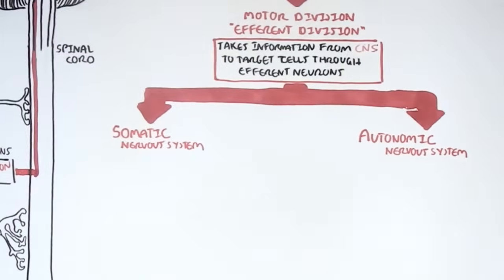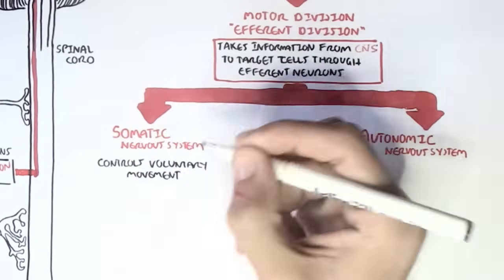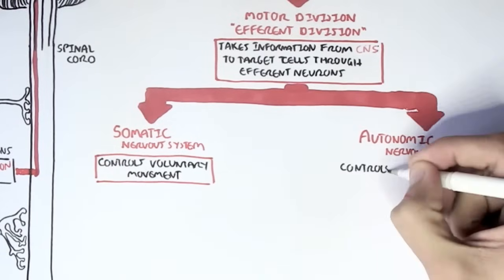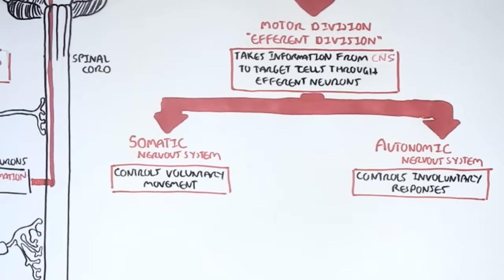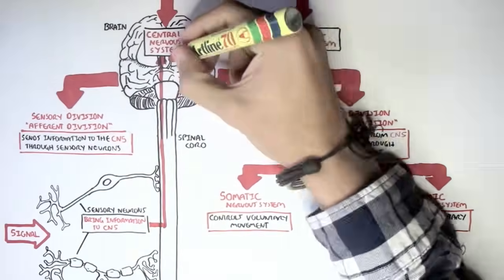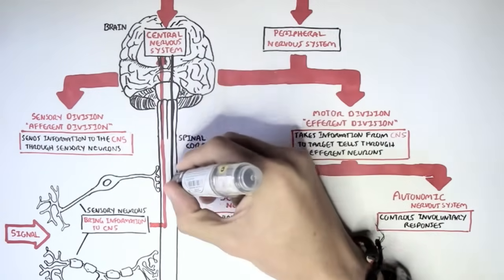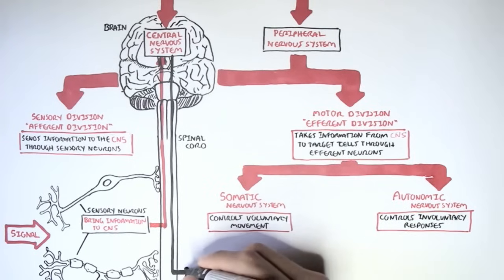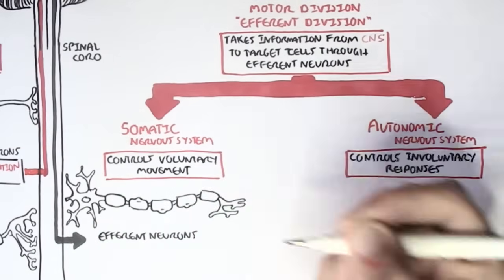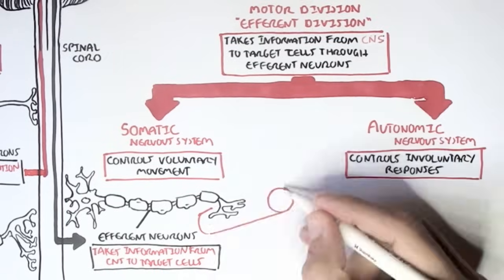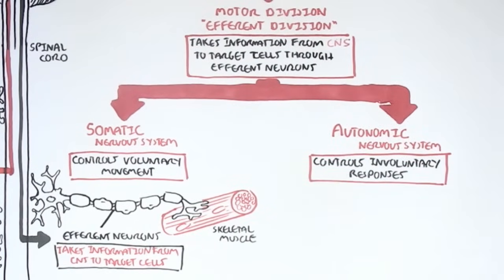The somatic nervous system is the control of voluntary movements. The autonomic nervous system is the control of involuntary responses. An obvious example of the somatic nervous system is where signals come from the central nervous system through efferent neurons to target skeletal muscle cells for movement — because we can consciously and voluntarily move our arms and legs.